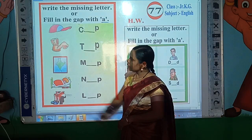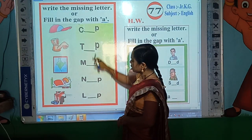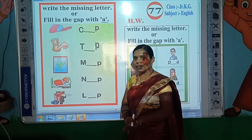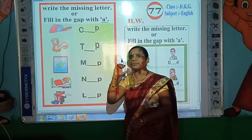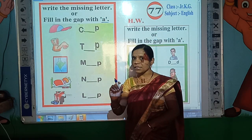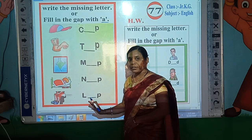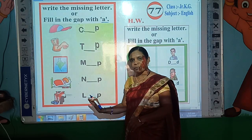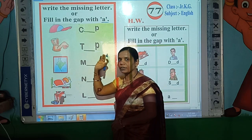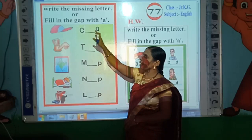Now look here. Some pictures are given here and some words are given here. In each word, one letter is missing. Which letter is missing? Write it here and fill in the gap. First look at the picture, there is the spelling, and whichever letter is missing, write that letter here.